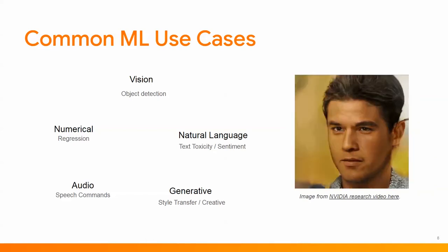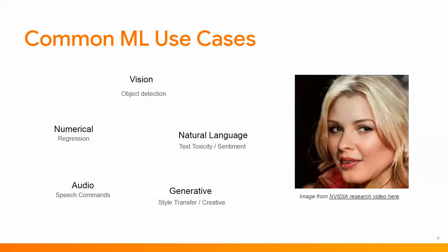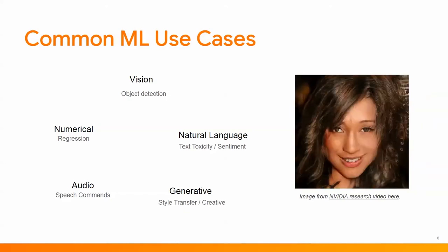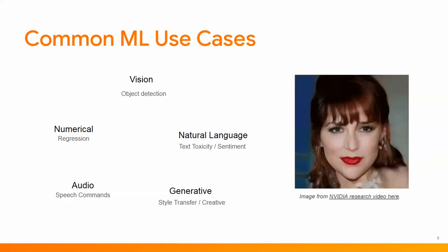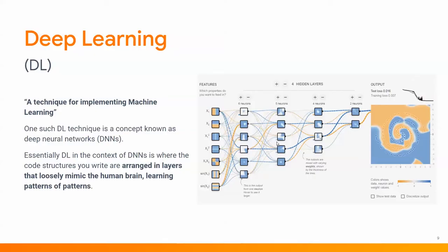On this slide there's an example from NVIDIA whereby they are generating human faces — and these faces do not actually exist in the real world. It's been trained on celebrities and you can see how this research can produce very cool imagery. Deep learning is a technique for implementing machine learning, and one such technique is known as deep neural networks. You can think of deep learning as the algorithm you might choose to use in your machine learning program.